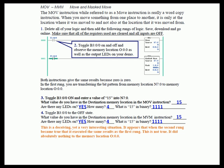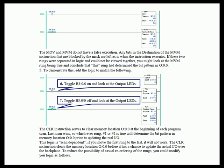If these two rungs were separated in logic and could not be viewed together, you might look at the Move with Mask rung being true and conclude that this rung determined the bit pattern in O:0.0 — but that conclusion would be incorrect.